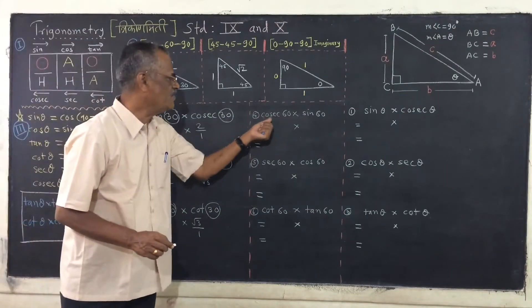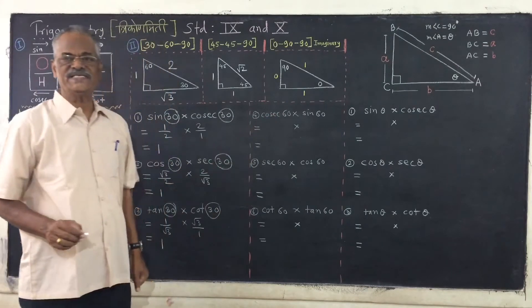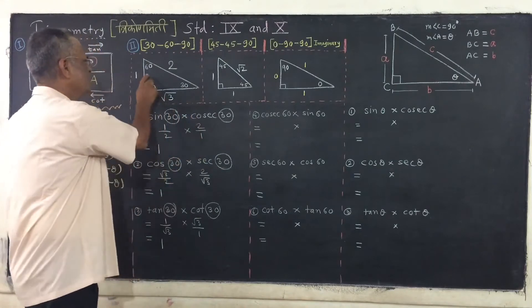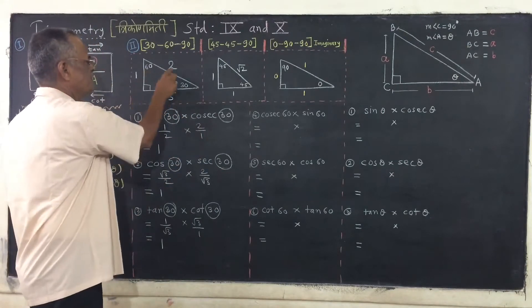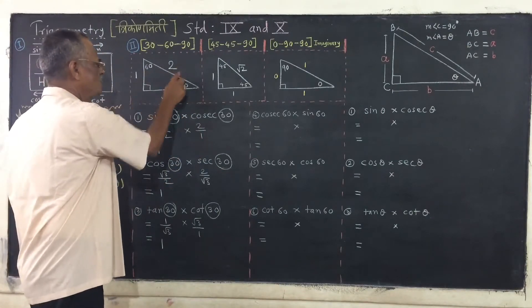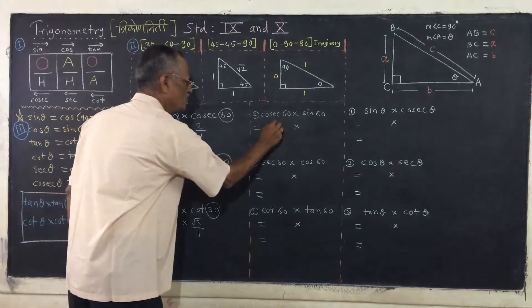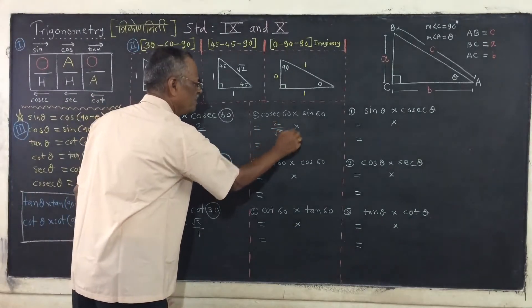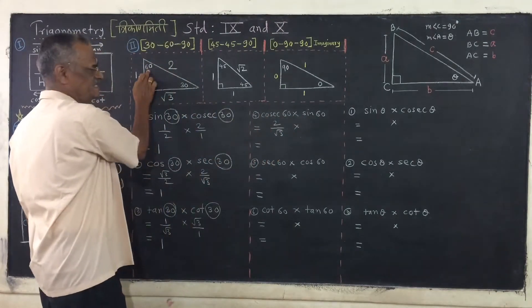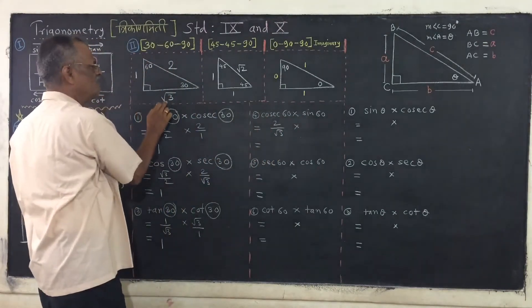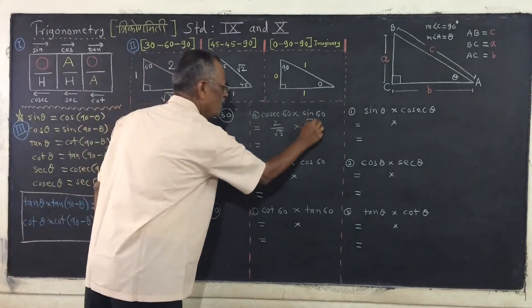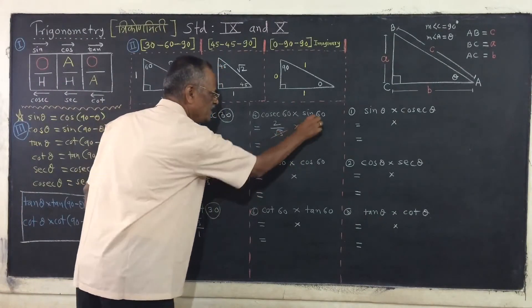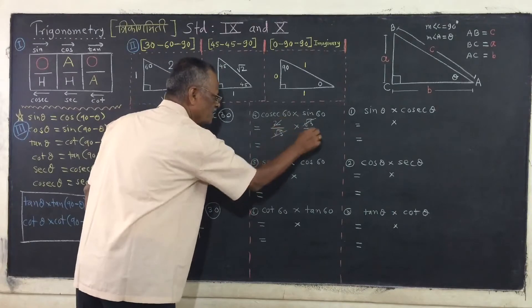Similarly, let us calculate cosec 60 into sine 60. You know that cosec 60 is 2 upon root 3, into sine 60, which is root 3 upon 2. And what is the product? You can see that product is 1.